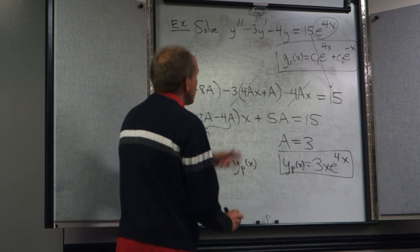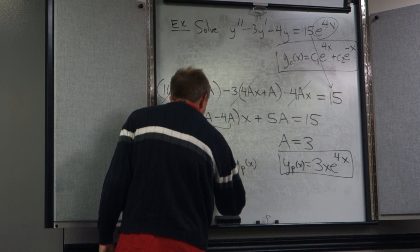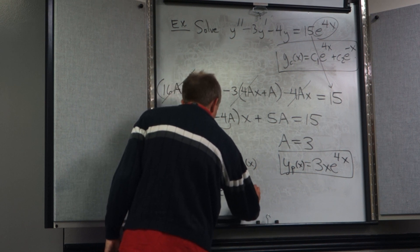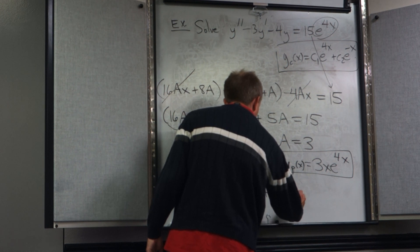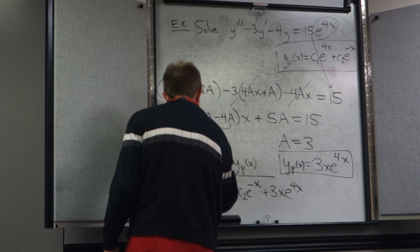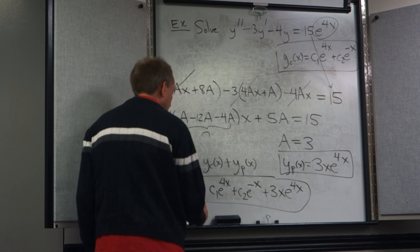In this case, it's not such a headache to actually just write it out. C1e to the 4x plus C2e to the negative x plus 3xe to the 4x. And this would be the answer.